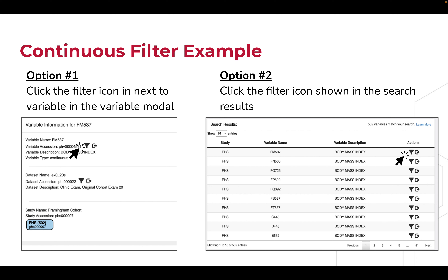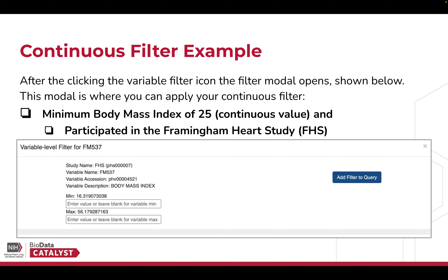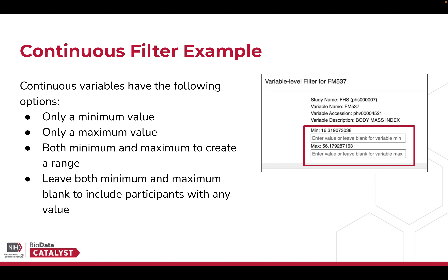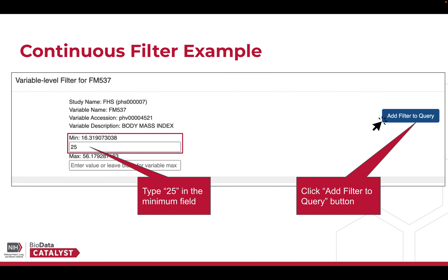Now that we've identified the variable we want to filter — FM537 Body Mass Index — we have two options on how to open the filter modal. Option one: from the variable modal, we can click the filter icon next to the variable. Option two: click on the variable filter icon from the search results. Now that we have a variable filter modal open, we can apply our continuous filter, Body Mass Index with a minimum of 25. For continuous variables, we can enter only a minimum, only a maximum, both minimum and maximum to get a range, or leave both blank to include participants with any value. For our example, enter 25 in the minimum field and click the Add Filter to Query button.